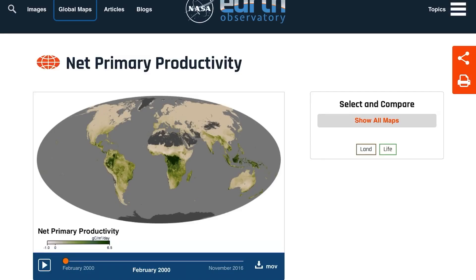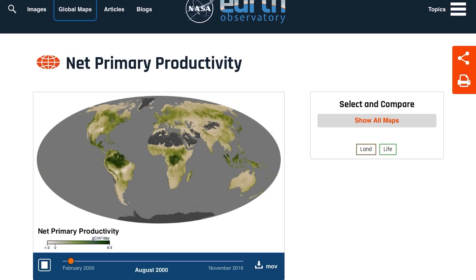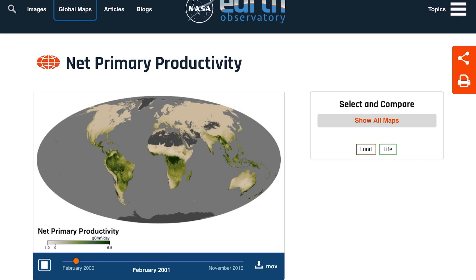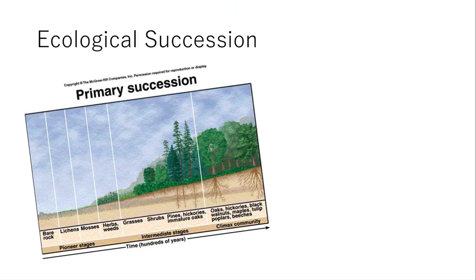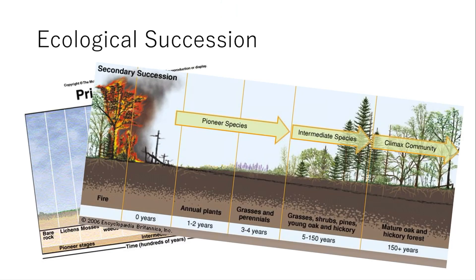Primary productivity is basically the measure of photosynthesis taking place. It changes as the seasons change across continents. Primary succession is when no soil exists — you start with lichens and mosses and eventually reach a climax community. Secondary succession occurs after a natural disaster or event where soil already exists, and it just takes time to reach the climax community again.